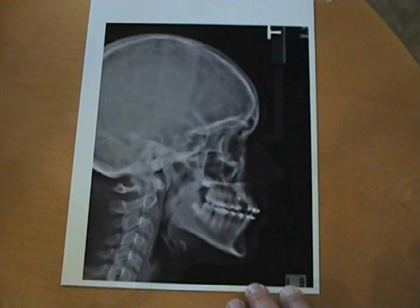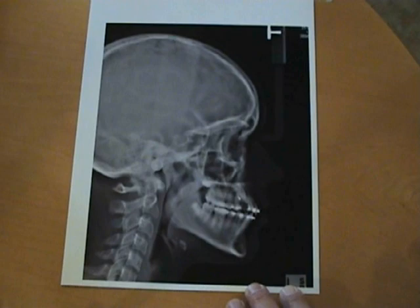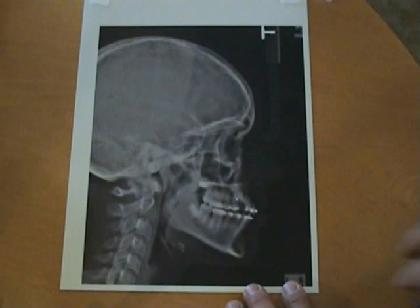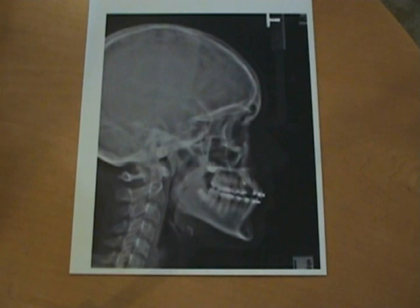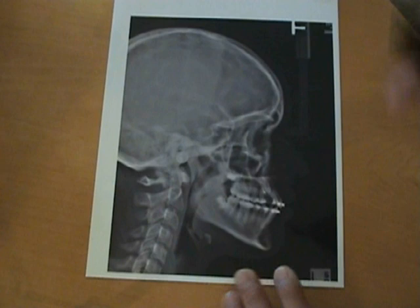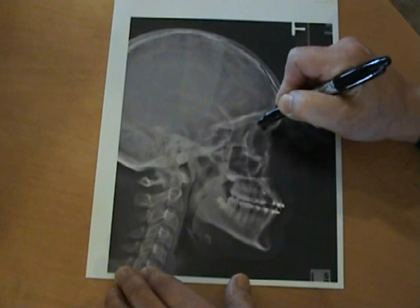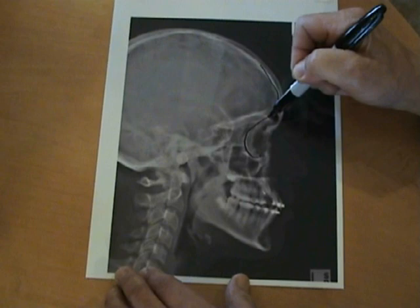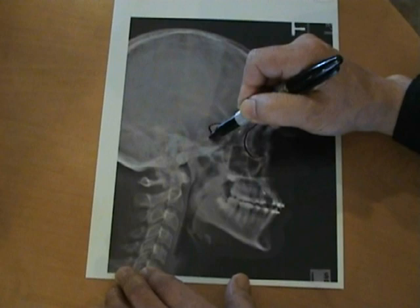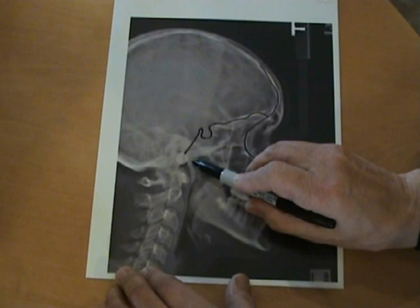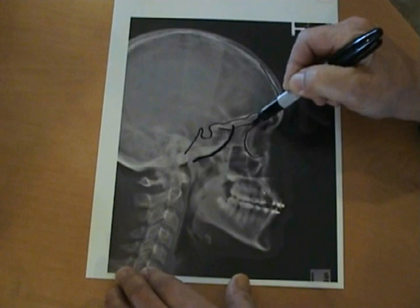I like to tape a clear acetate over the cephalometric radiograph. I would like to use a magic marker to trace the anatomy. This is the cranium, and this is the lateral border of the orbit. This is the roof of the orbit. Sella turcica. Greater wings of the sphenoid. Cribiform plate.